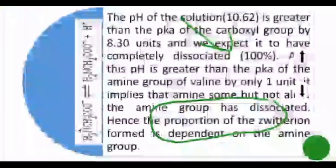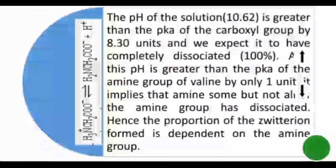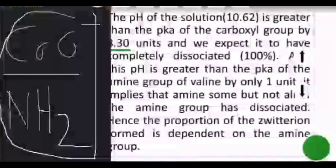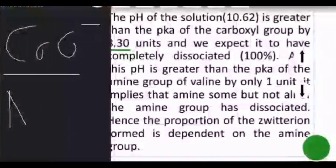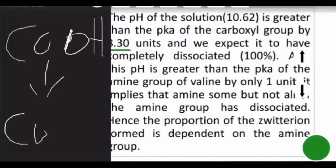The pH is greater than the pKa of the carboxyl group by around 8.3 units. This difference is so large that all of the carboxyl group will have dissociated — it will have changed from COOH to COO⁻. We therefore expect complete dissociation of the carboxyl group.